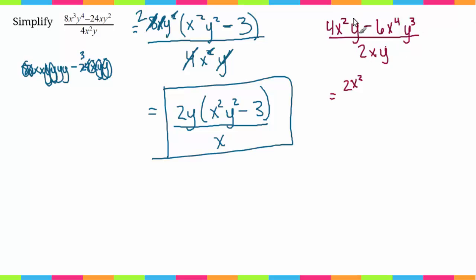So the greatest common factor of 4 and 6 is 2, so I would pull a 2 out. Now my biggest x factor would be x squared, so I would pull that out. And my biggest y would be this y here, so I'd pull one y out.